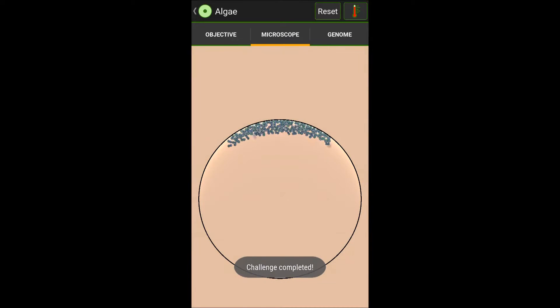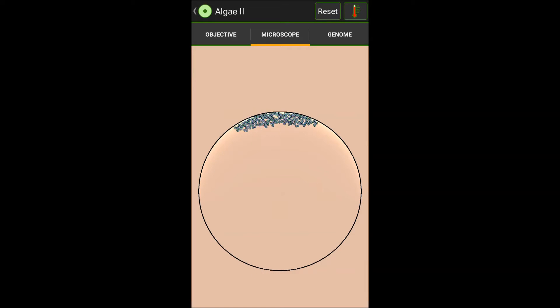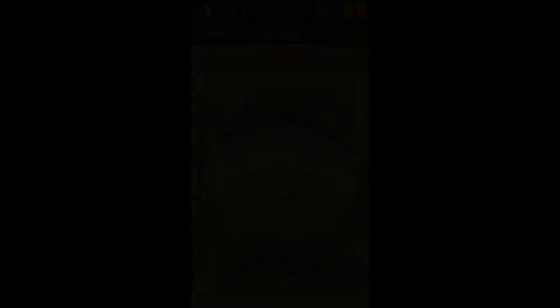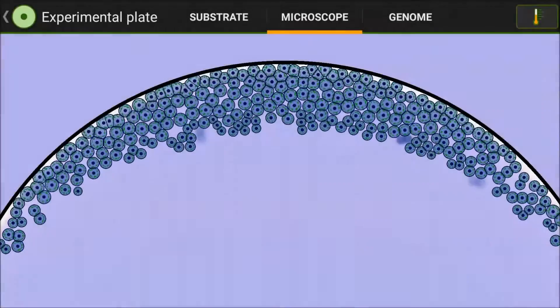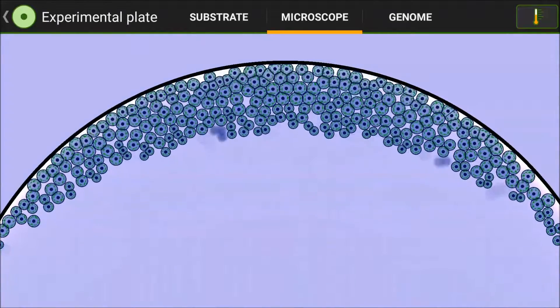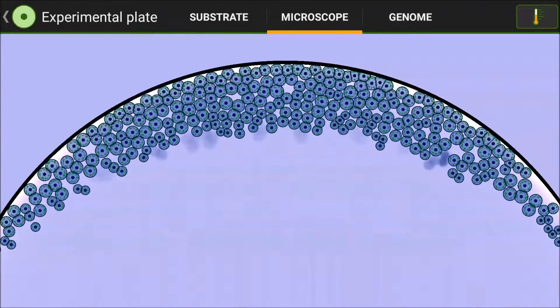Eve then went on to complete not just one challenge, but both algae and algae two. The previous species had barely been able to survive on those challenge substrates, but Eve thrived. It was clear to me now that we had a strong base to begin my True Evolution challenge.